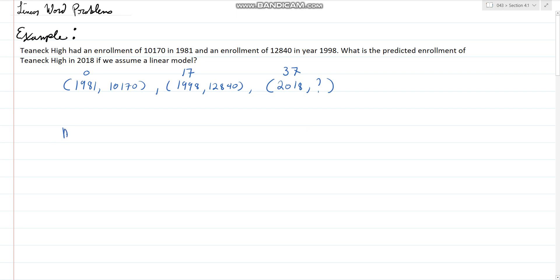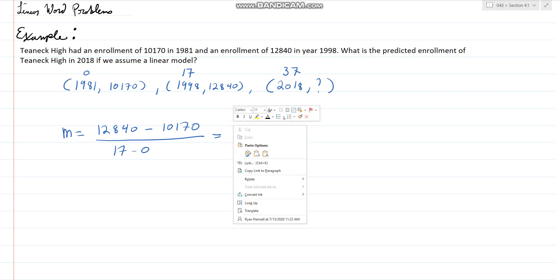Now I can find the slope. The slope is 12,840 minus 10,170 over 17 minus 0. So we're going to get 2,670 over 17. This will be the slope. Now we need the y-intercept, but we already know it because this is the first enrollment we're given, so this is the y-intercept.